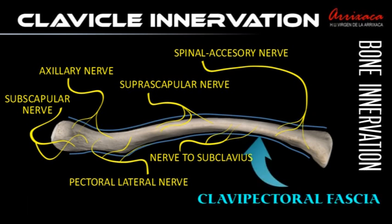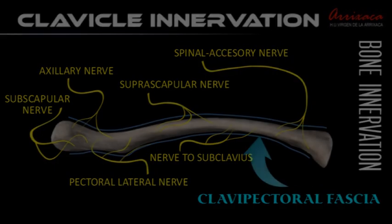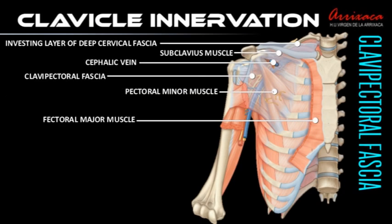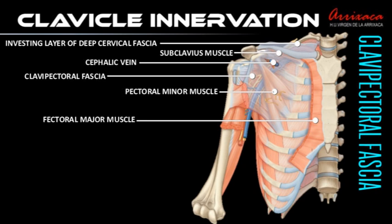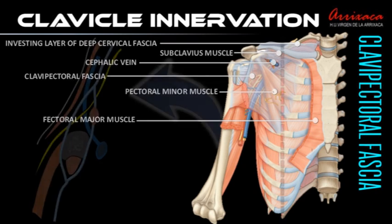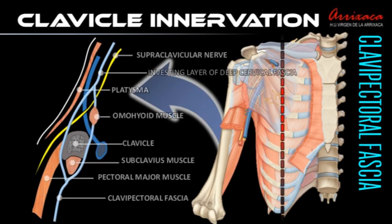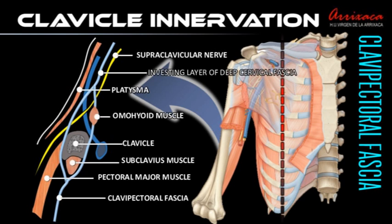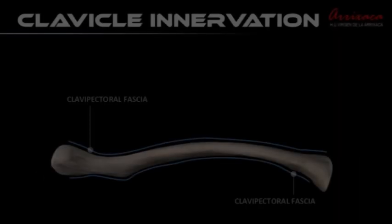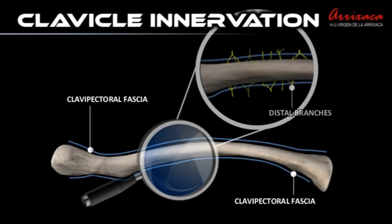The clavipectoral fascia is a strong fascial plane situated on the cover of the clavicular portion of the pectoralis major. It occupies the interval between the pectoralis minor and subclavius, enclosing both muscles within two layers. At the top level, both layers of the clavipectoral fascia are attached to the clavicle, forming a circular structure surrounding the entire clavicle.